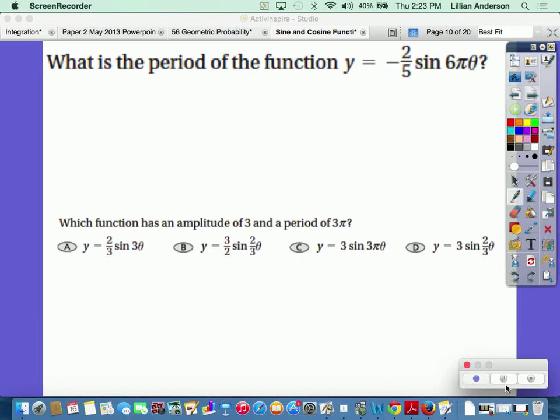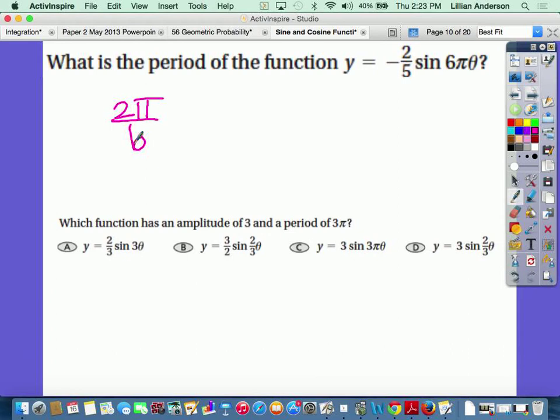So what's the formula to find your period? 2 pi over b. In this particular problem, what's my b? 6 pi. The b is always the number that's attached to the theta. And pi is not a variable, it's a number.